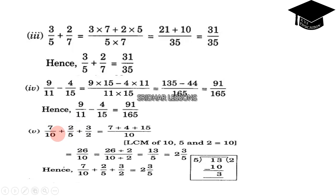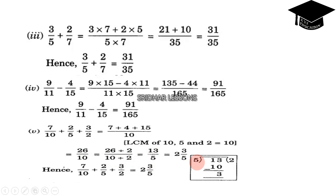Next: 7 by 10 plus 2 by 5 plus 3 by 2. The LCM of 10, 5, and 2 is 10. For 7 by 10, it stays 7. For 2 by 5, multiply by 2: 2 into 2 equals 4. For 3 by 2, multiply by 5: 5 into 3 equals 15. Therefore 7 plus 4 plus 15 is 26, giving 26 by 10. Simplifying, 2 cancels to give 13 by 5. Dividing 13 by 5, remainder is 3. So the result is 2 and 3 by 5.